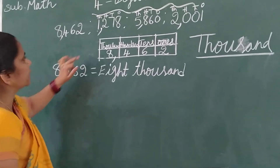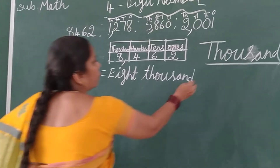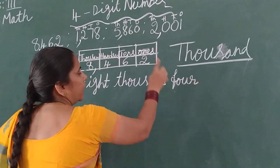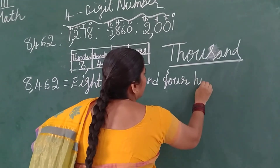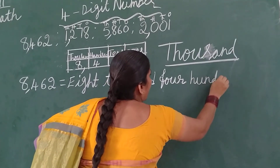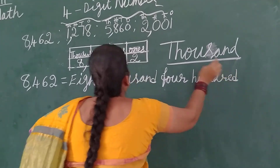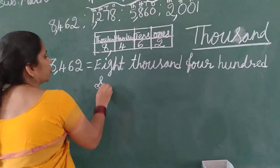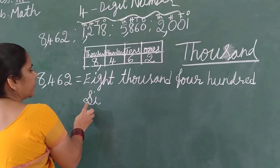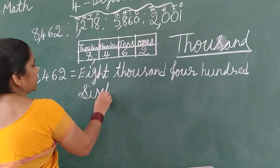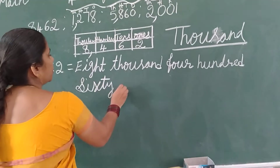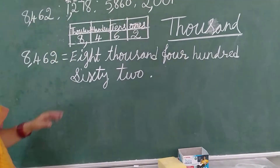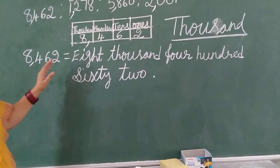4 is in which place? The 100s place. So: Four Hundred. And next, these two digits together at a time: 62. 62 spelling — Sixty Two. So 8,462 written in words is: Eight Thousand Four Hundred Sixty Two. Now you all understood how to write a number name.